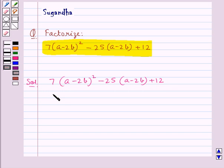First we substitute (a-2b) = x. So we get 7x² - 25x + 12.